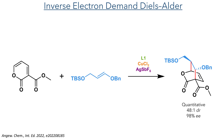The inverse electron demand Diels-Alder took place between a pyrone and a benzyl enol ether. This was promoted by a copper complex containing a chiral ligand and produced the target compound in a quantitative yield with a 48:1 DR and 98% ee.